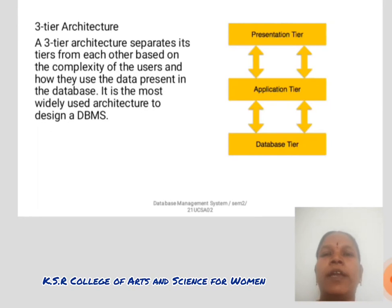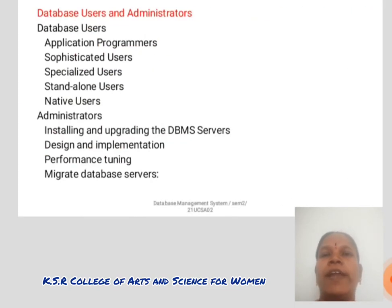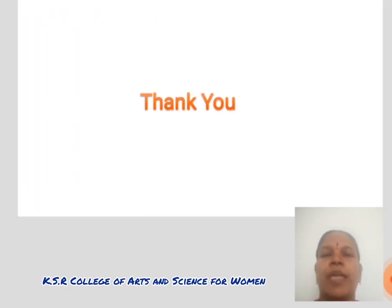Three-tier architecture separates each tier from the others based on the complexity of the users and how they use data present in the database. It is the most widely used architecture to design a DBMS. Database users include: administrator, application programmers, sophisticated users, specialized users, standard users, and naive users. Administrator responsibilities include installing and upgrading the DBMS server, designing and implementation, performing tuning, and migrating database servers. Thank you.